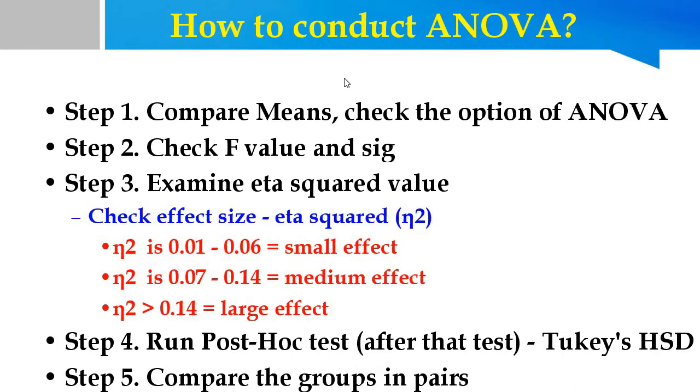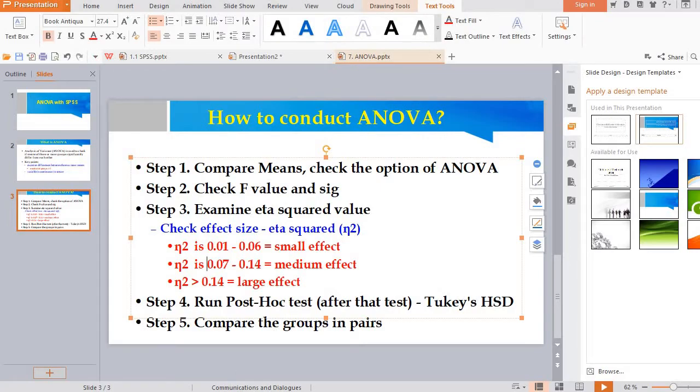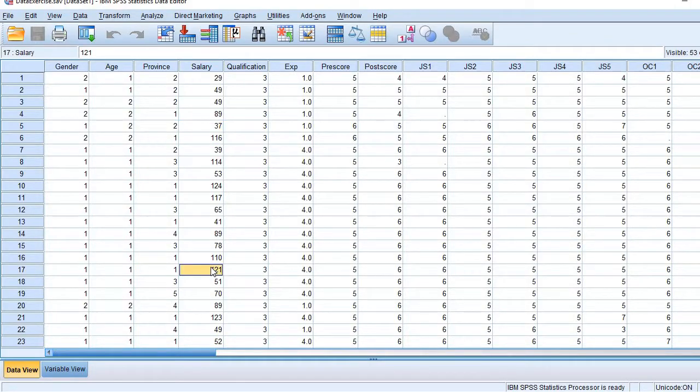So let us run in SPSS. So here is the SPSS variable on which we have to compare the groups in the salary. The groups are the provinces. So we have five groups.